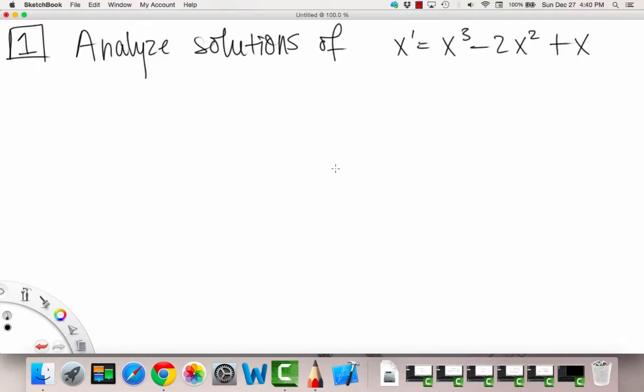We're going to analyze solutions of x prime equals x cubed minus 2x squared plus x. So the first thing to note is that this here is an autonomous equation, right? Because the right side depends only on x and we don't see any independent variables like a t or anything like that. Okay, so this is equal to a function just of x,